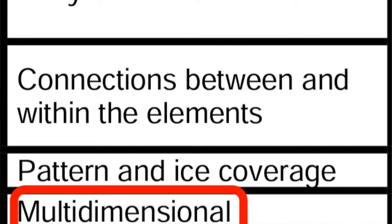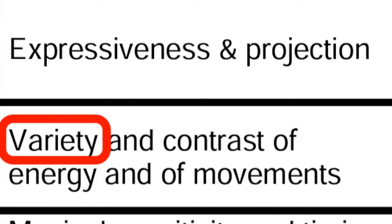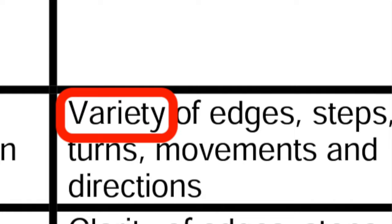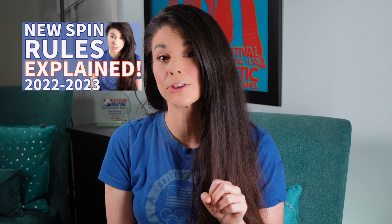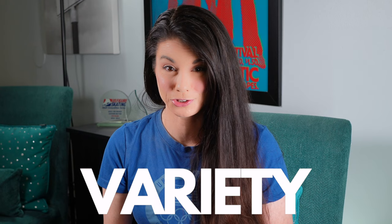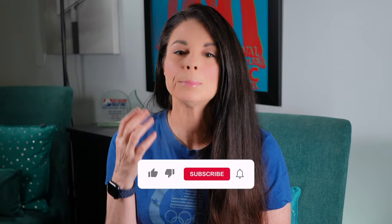You may notice some common threads that move across the components. Multi-dimensional movements and the use of space are evident in composition; we see variety and contrast of energy and movement in the presentation component; and we see variety of edges, steps, turns, movements, and directions in skating skills. Variety is really ever-present in all of these components. You may remember I talked quite a bit about variety in my video about the new spin requirements — so variety is your key word for the 2022-2023 season. The judges and technical panel want to see you using more variety. Variety is the quality or state of being different or diverse — the absence of uniformity, sameness, or monotony. Apply that to your skating: strive to be different and unique, and avoid repetitive movements.